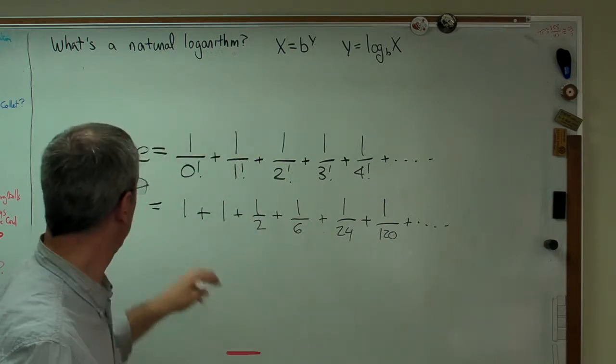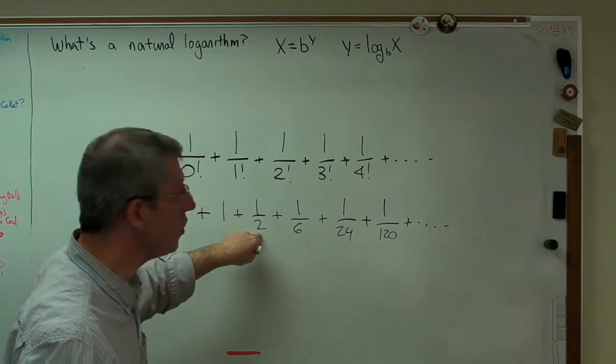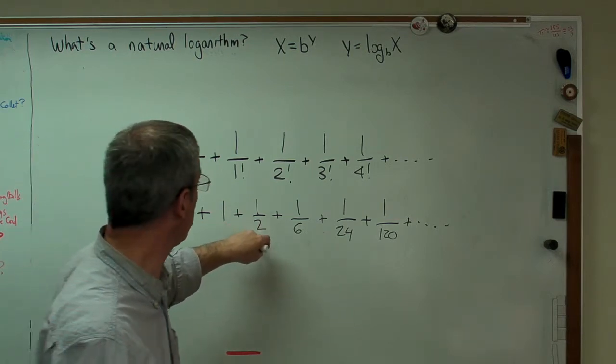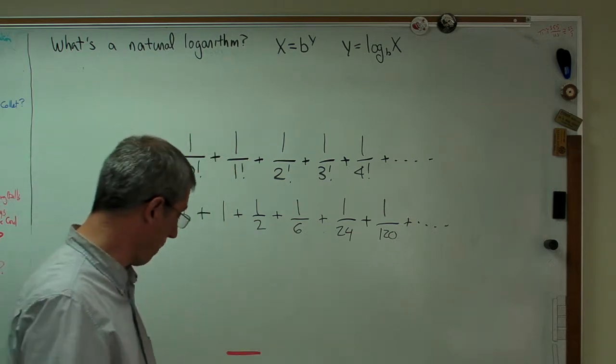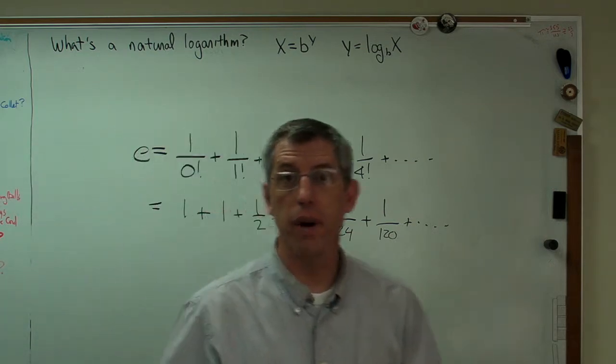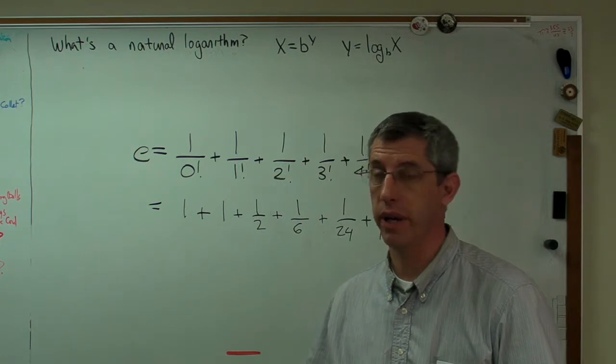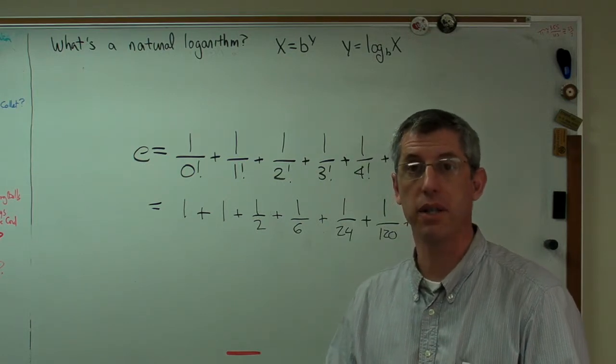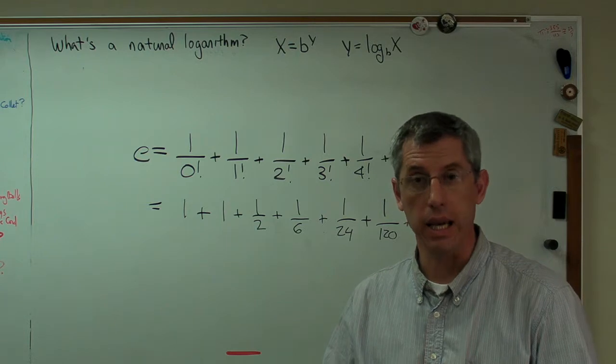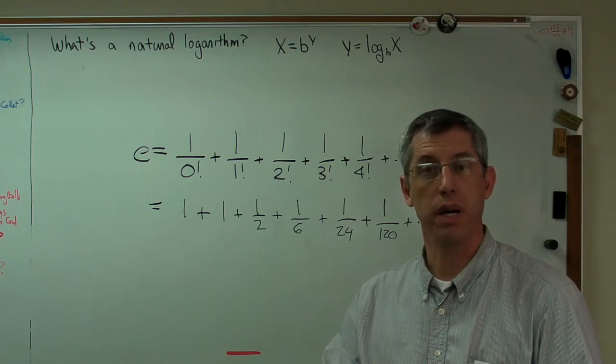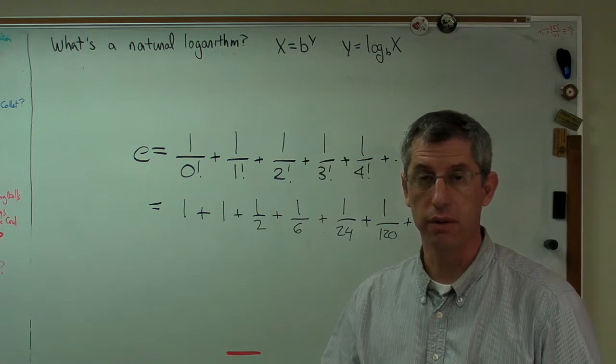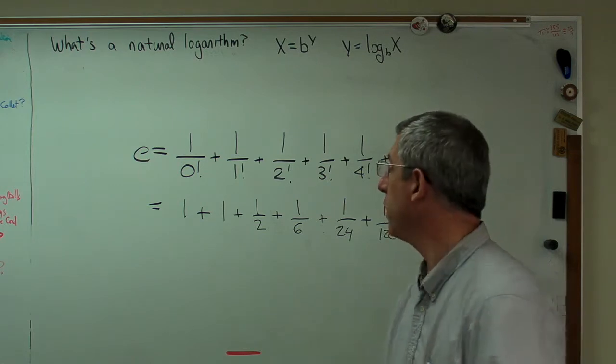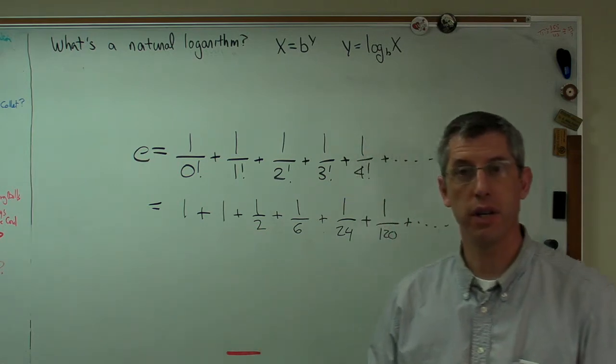If you add this series up, you're going to get e. 1 plus 1 plus 2 is already 2 and a half, so you can see in those first three terms, you're getting close. So now we know natural logarithm acts just like a common logarithm, like any other logarithm. It just has a different base. Its base is e. It's valuable because e to the x is its own derivative and its own integral. And also, now we know how to calculate e. So there you go.